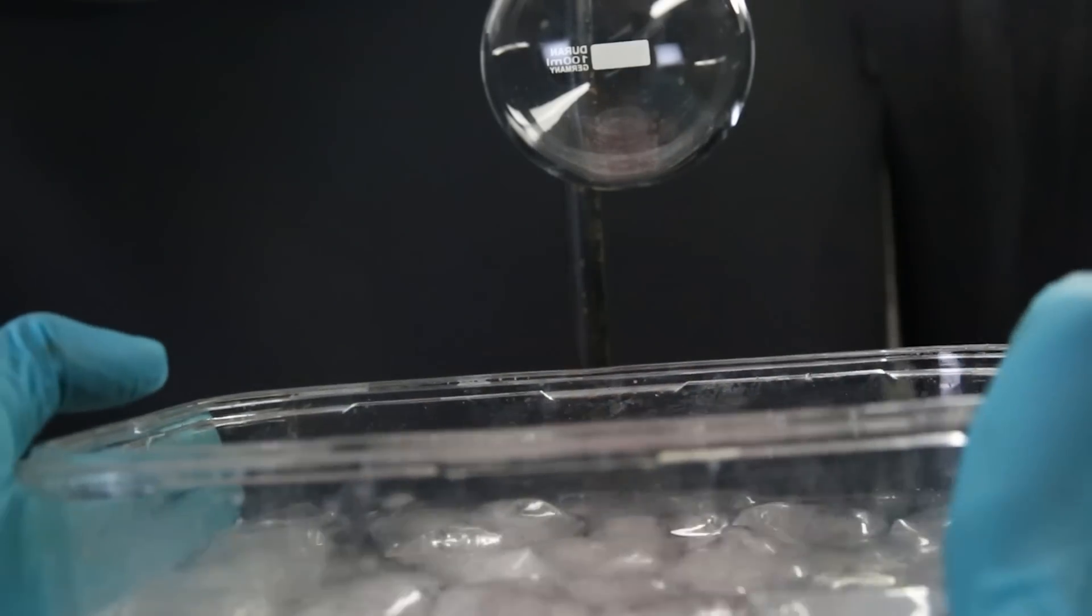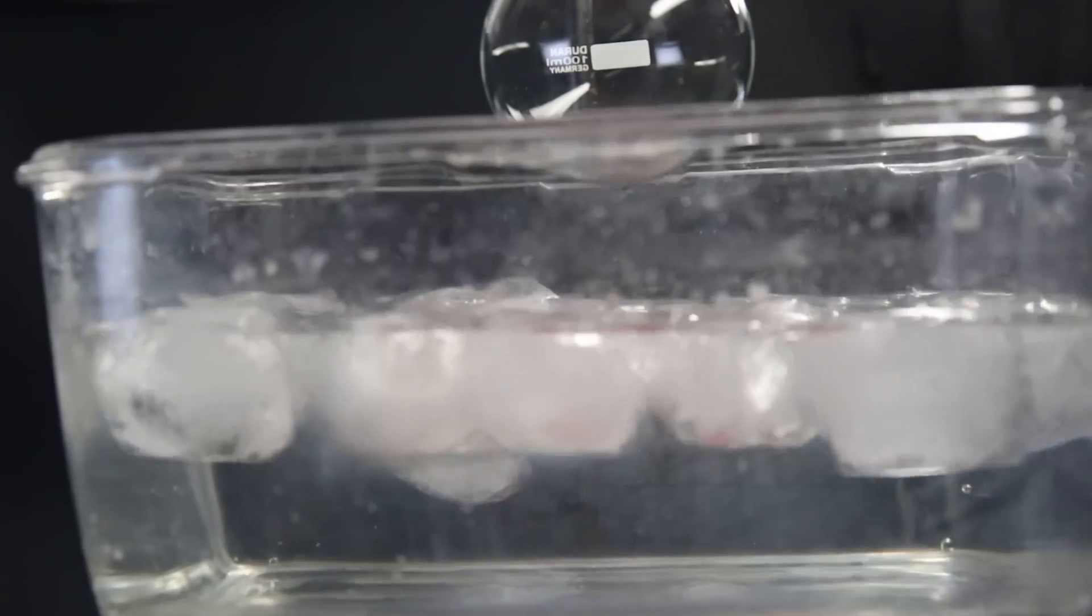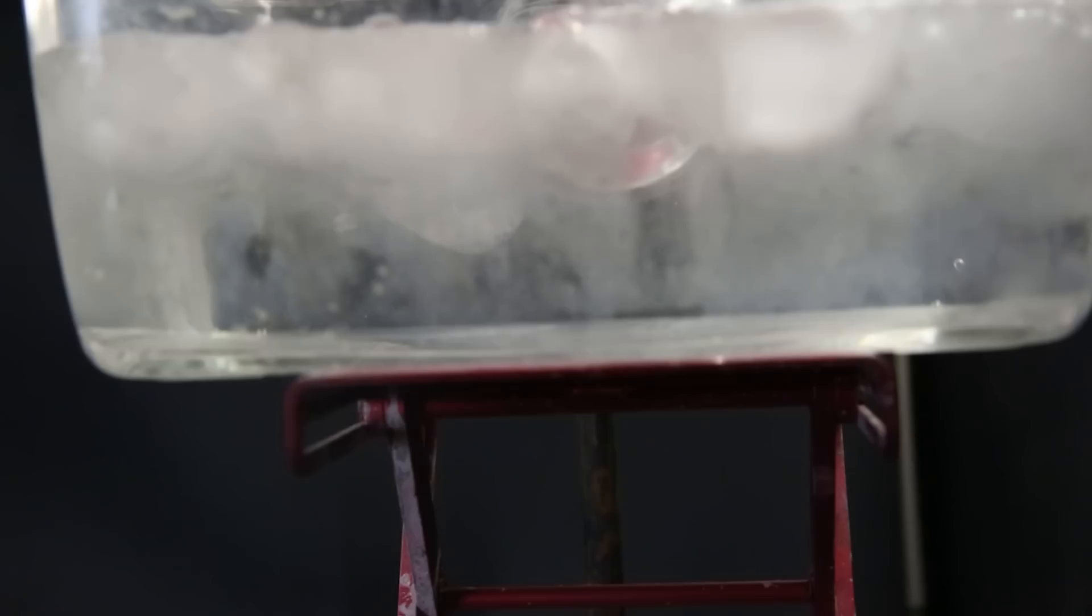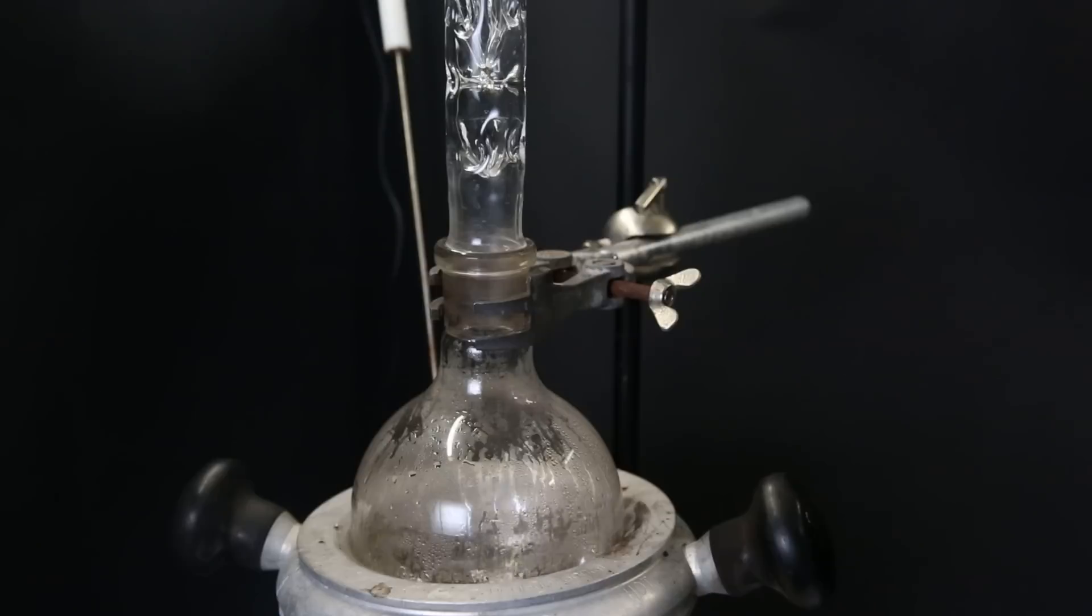Since the cyclopentadiene wants to turn back into dicyclopentadiene at room temperature, I add an ice bath under the receiving flask to prevent this as much as possible. Now to start the cracking process, I simply heat the mixture to a boil and wait for the cyclopentadiene to come over.